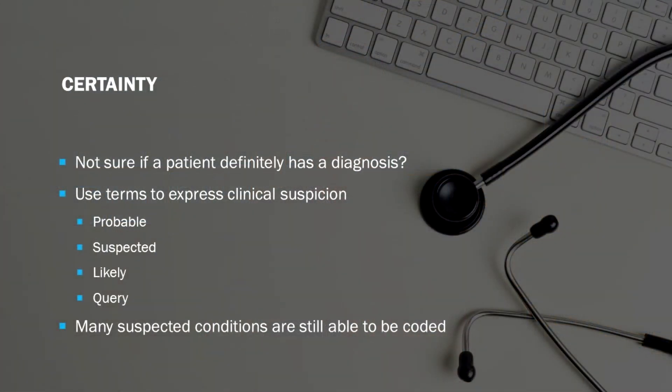Let's talk about certainty, because sometimes you have a diagnosis you're pretty certain about due to investigation or clear clinical presentation. But sometimes we're not completely certain, and there are ways we can still code for those issues even at diagnosis. You can use terms like 'probable' — where you're fairly certain — or 'suspected' and 'likely' — where you're reasonably certain of the direction — or 'query' and a question mark when you're not sure at all. Many of those conditions, even when suspected or queried, can still be coded while being worked up.